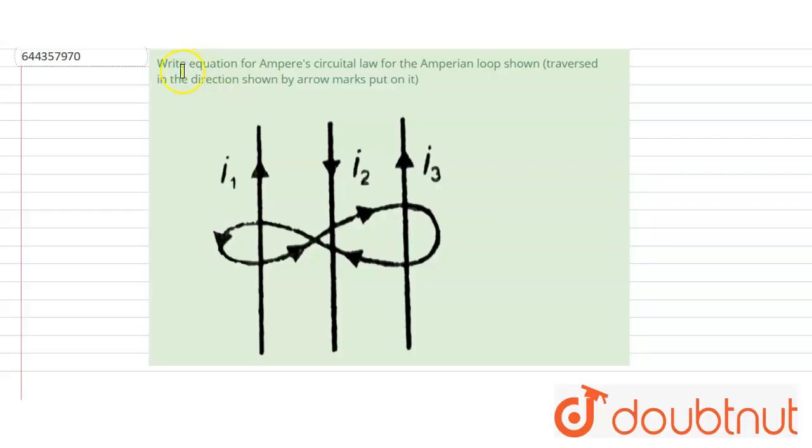Hello everyone, let's start the question. The question is: write equation of Ampere's circular law for the Ampereian loop shown, traversed in the direction shown by arrow marks put on it.